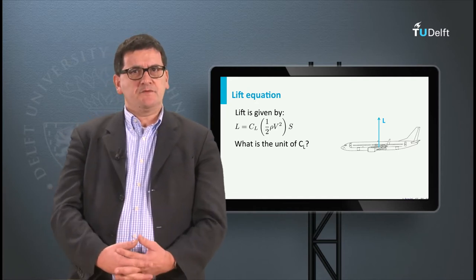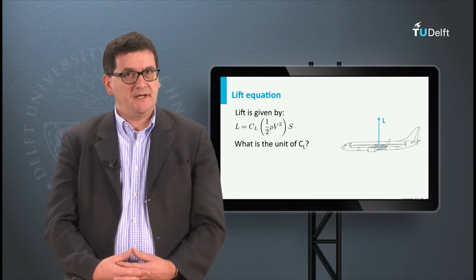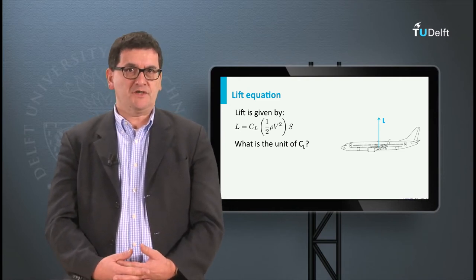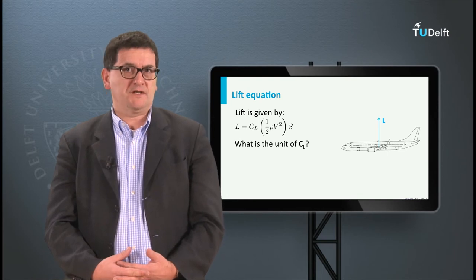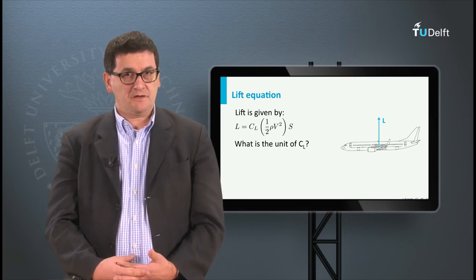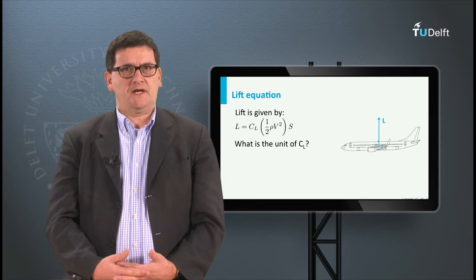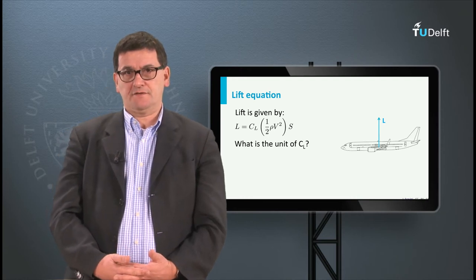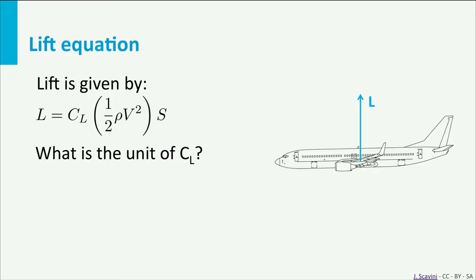In this case we use a dimension analysis. Such analysis can also be used to check whether a formula or equation is correct. If not, the dimensions on both sides of the equal sign are different. In our case we can fill in the known dimensions of the parameters.